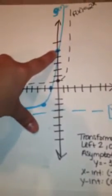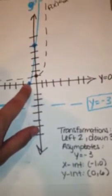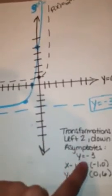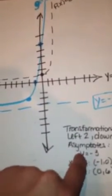The x-intercept is (-1, 0), so you go to negative 1, 0. And the asymptote is y = -3.